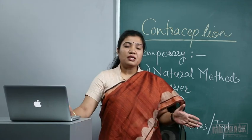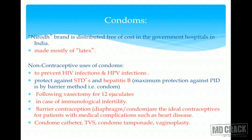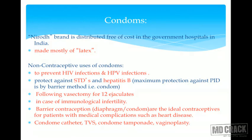Questions may ask which contraceptive protects against PID — the answer is barrier. Following vasectomy, condoms must be used for approximately 12 more ejaculates because sperms may still be present in the conducting system. For immunological infertility, barrier methods can be used while antibody response corrects. Barrier contraceptives are ideal in heart disease patients — they do not increase thromboembolic risk or put extra load on the heart.